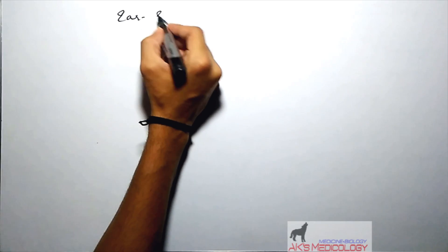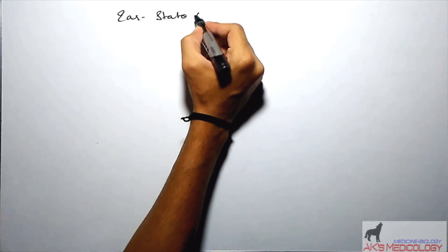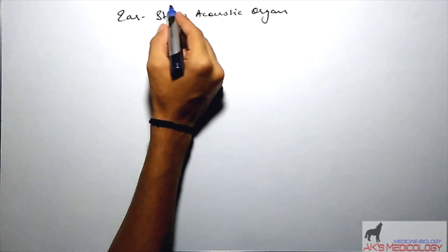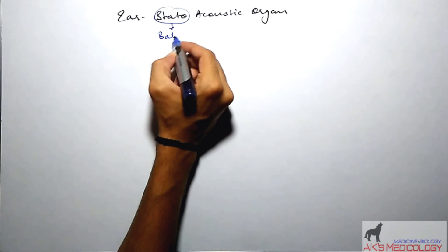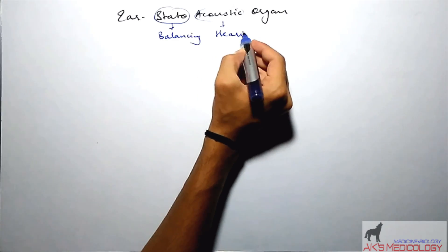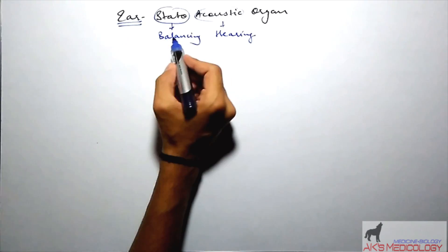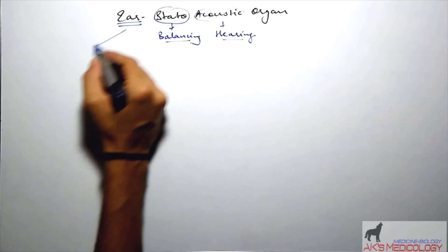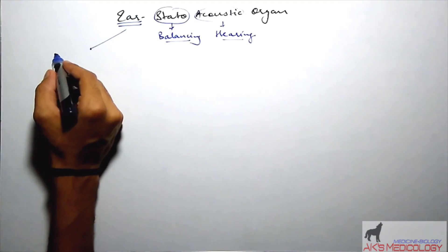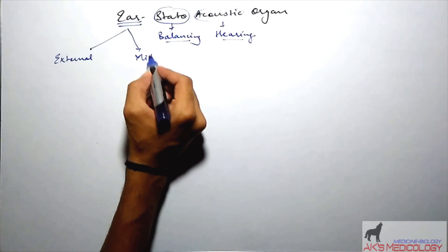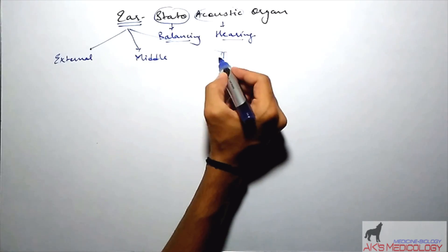The ear is also known as the Stato-Acoustic Organ. 'Stato' refers to balancing of the body, and 'Acoustic' means hearing. So basically the ear performs the dual function of balancing the body and hearing. In this video we are concerned with the hearing function, or the acoustic function of the ear. The ear is divided into three parts: external ear, middle ear, and internal ear.